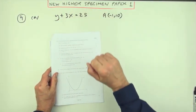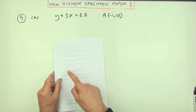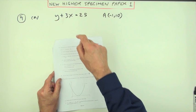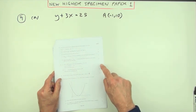Number nine, from the new higher specimen paper number one, equations of lines. This first part, AB is a line parallel to this one that goes through this point. Find the equation of that line for just one mark.